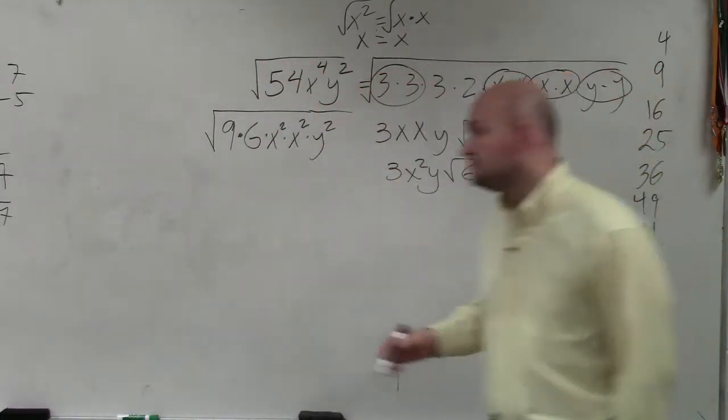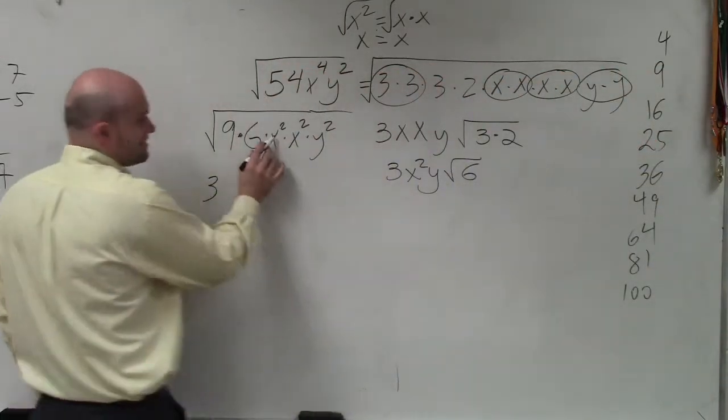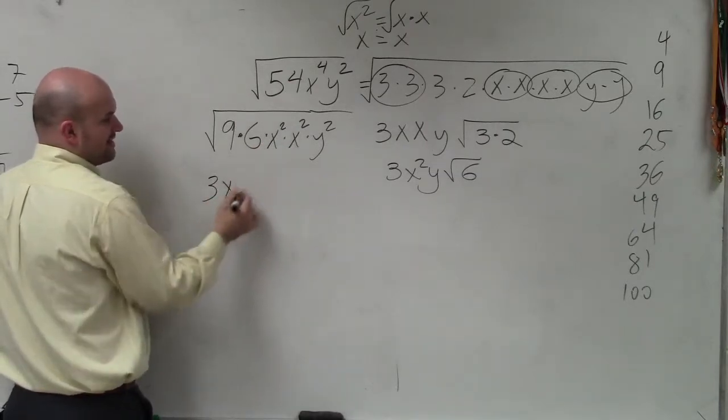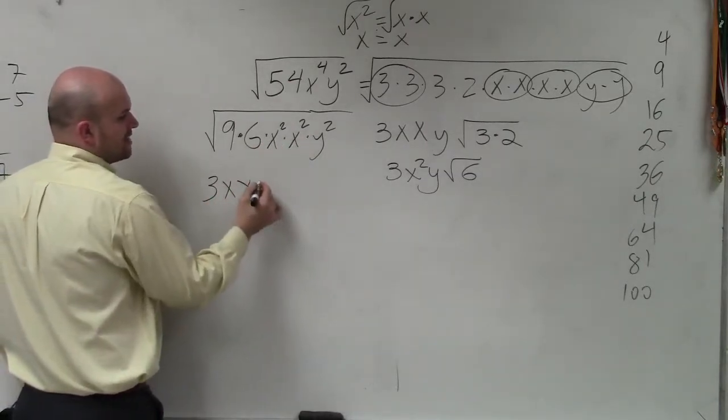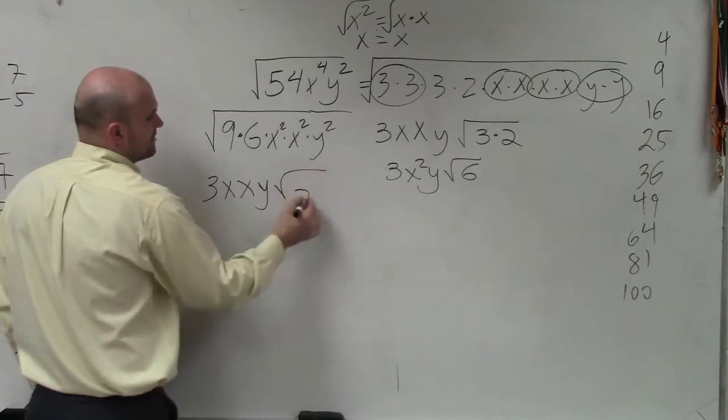So again, can I take the square root of 9? Yeah, that's 3. Can I take the square root of x squared? That's x. Square root of x squared? That's x. Square root of y squared? That's y. I'm just left with 6.